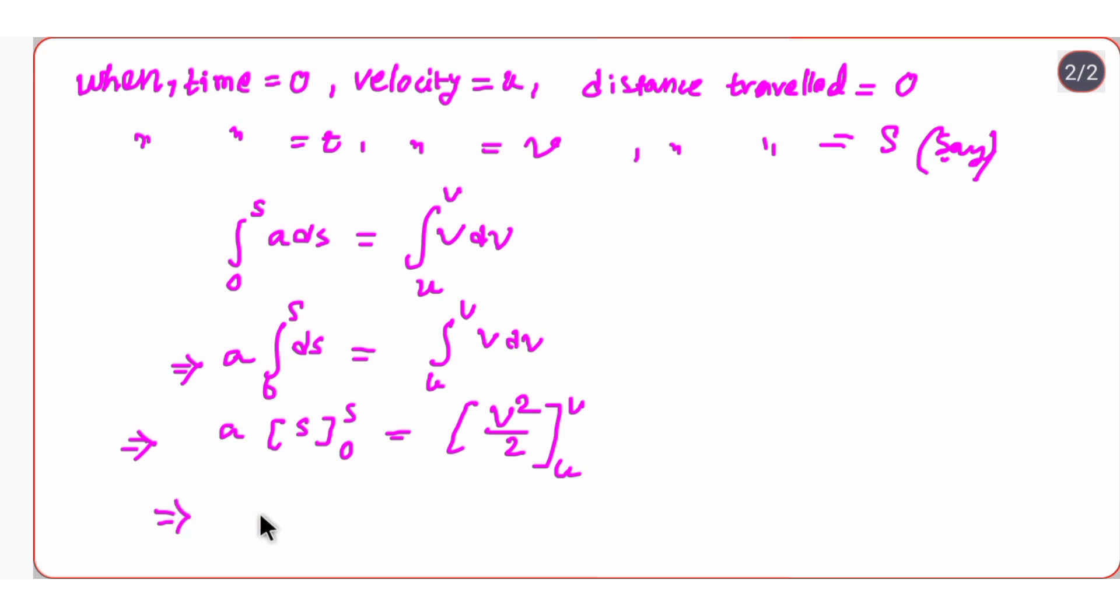Now let's put the limit, so a times upper minus lower, s minus 0 equals v squared by 2 minus u squared by 2. In the next step we can write a times s equals half of v squared minus u squared.